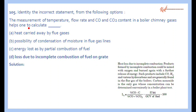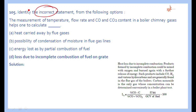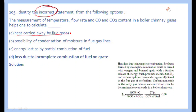The next question: measurement of temperature, flow rate, and CO and CO₂ content in boiler chimney gases helps one to calculate which of the following. It can help find the heat amount of flue gases, the possibility of condensation of moisture in flue gas lines, and energy lost by partial combustion of fuel — since incomplete combustion generates CO, hydrogen, CO₂, and other hydrocarbons. Option D — loss due to incomplete combustion on the grate — is the incorrect answer.